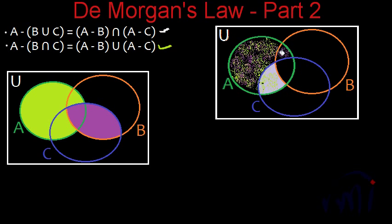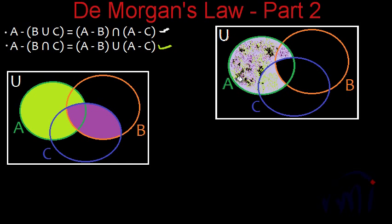This combined area represents A minus B union A minus C, and it is the same area represented with light green color in our earlier drawing. So this is the proof of the fourth law using Venn diagrams. In our next video we are going to learn how to write the proof of these identities. Keep watching MathsMart, bye-bye till then.